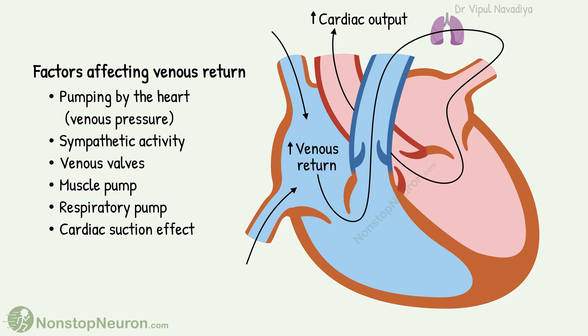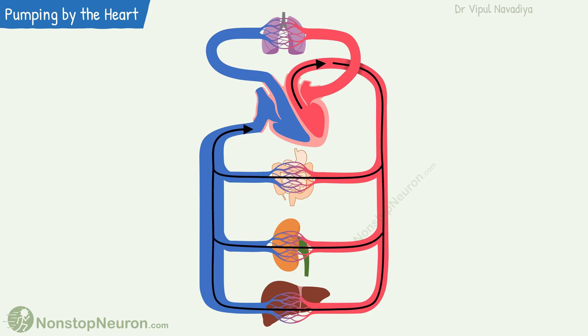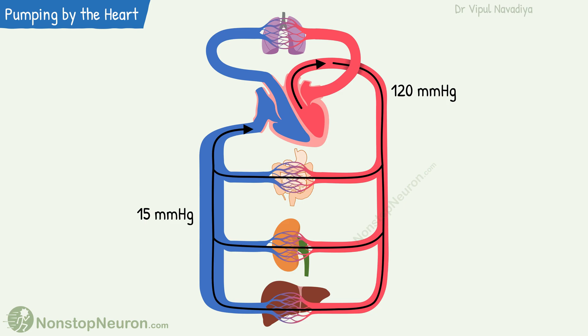First, the pumping by the heart. As the ventricles contract, they push blood into circulation. Since the circulatory system is a closed circuit, this push naturally tends to make blood return to the heart on the opposite end. This pushing is driven by pressure along the vascular circuit. Pressure in arteries is about 120 mmHg, but much of this pressure is lost in small diameter vessels.